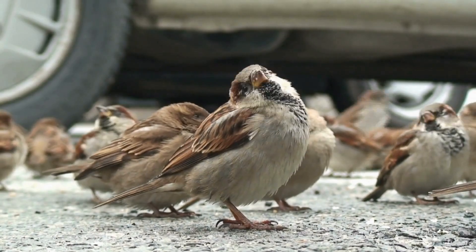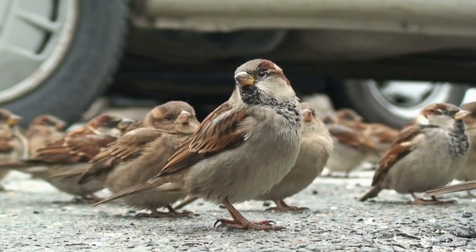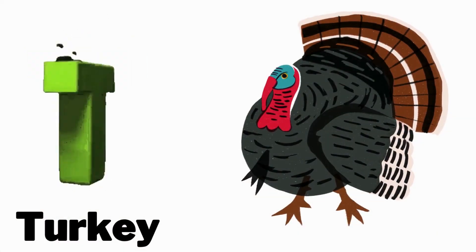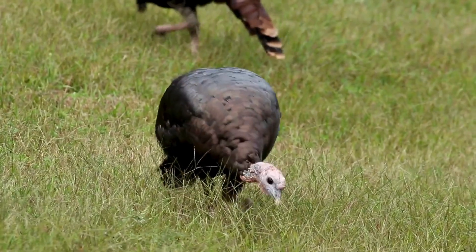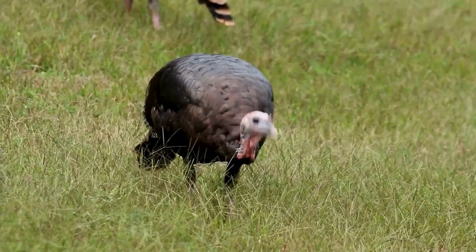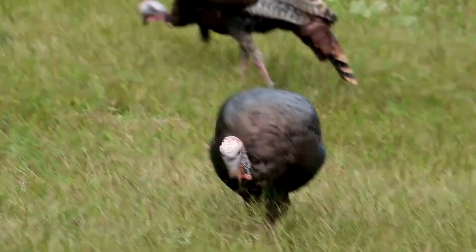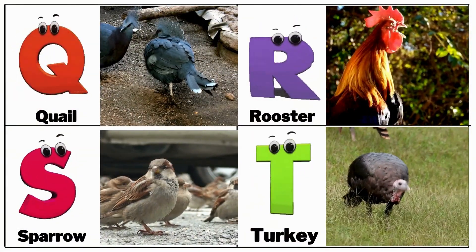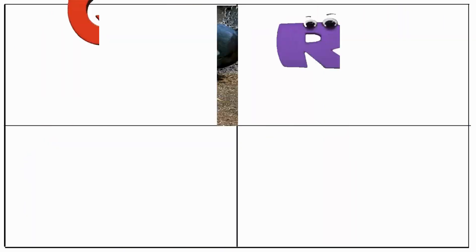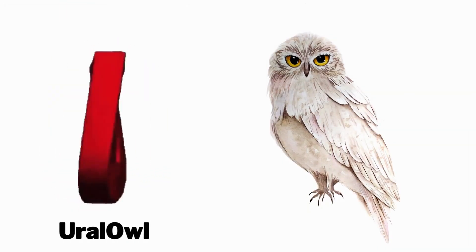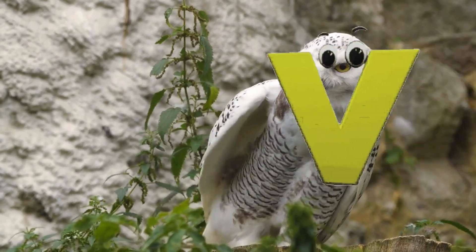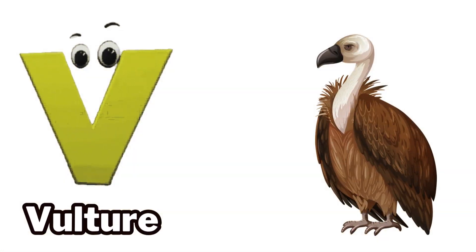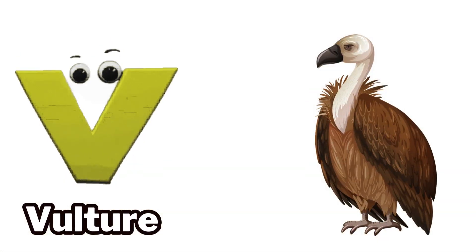T is for turkey, t t turkey. U is for uro owl, uro owl uro owl. V is for vulture, v vulture.